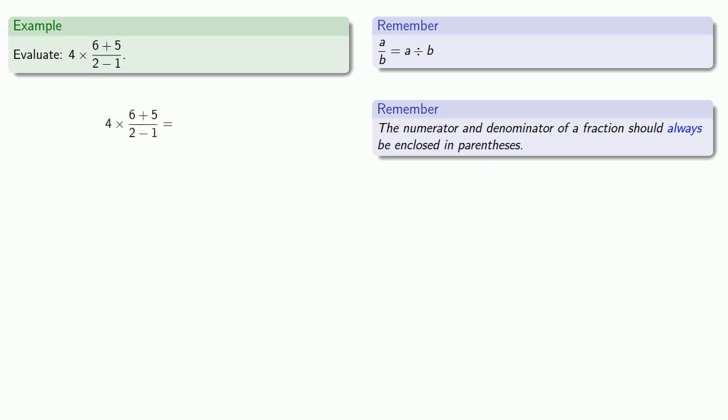So we'll bag up the numerator and the denominator. Order of operations says we should go left to right UNLESS. And here the UNLESS is we have things in parentheses we have to take care of first. 6 plus 5 and 2 minus 1. So equals means replaceable. So replacing them, we get the fraction 11 over 1.